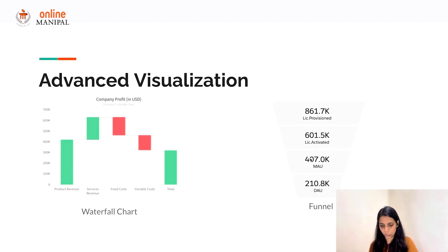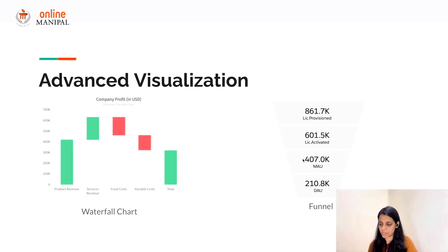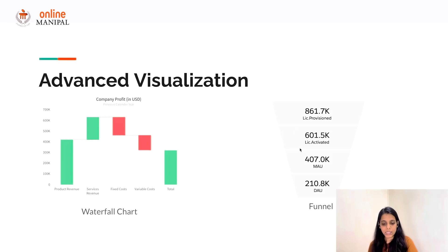For example, here we show the licenses provisioned to users, then how many of those users activated the licenses, then how many are using it on a monthly basis, and then how many on a daily basis. This funnel gives us a very clear picture of product adoption.